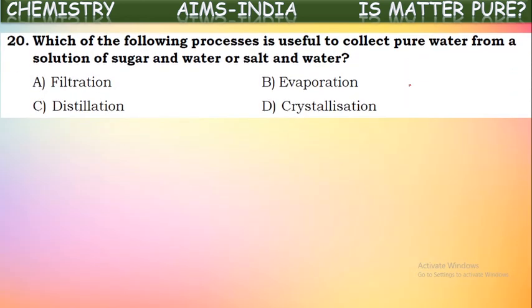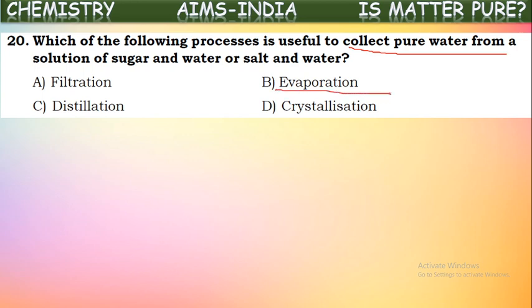Which process is useful to collect pure water from a solution of sugar and water or salt and water? We can use either distillation or evaporation to separate these. In evaporation, water is evaporated off and pure salt or sugar remains, but the water cannot be collected. To collect the liquid component — pure water — we must follow distillation, because the vapors are collected and condensed back into liquid form. So distillation is the correct process.